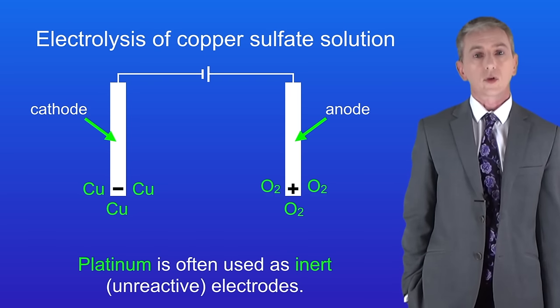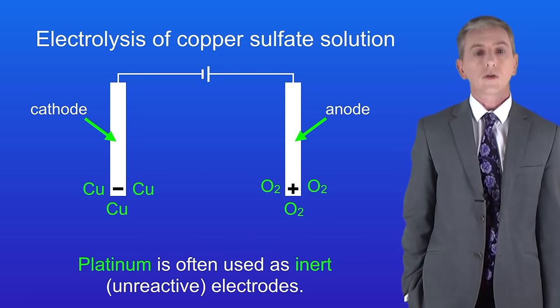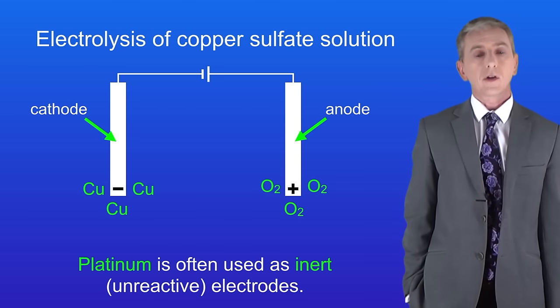Now it's important that the electrodes do not react with the chemicals that we're making in electrolysis. Scientists say that the electrodes are inert. In other words they do not react. Platinum is often used as an electrode as it's a very unreactive metal.